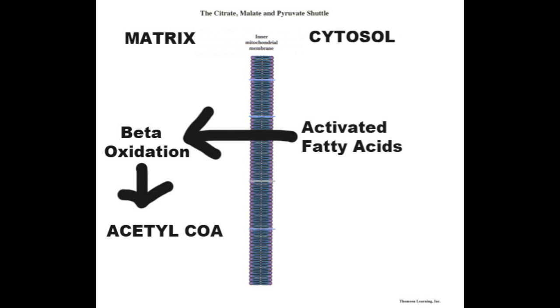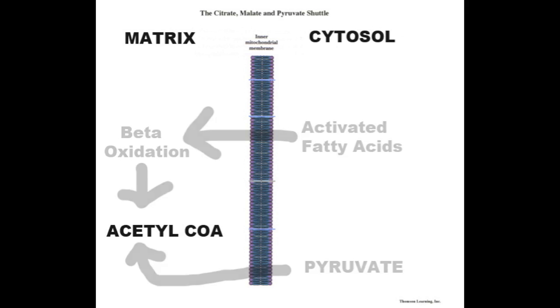Remember that when glucose is present, glycolysis will occur, producing pyruvate in the cytosol. This pyruvate will be transported into the mitochondrial matrix and then converted by pyruvate dehydrogenase into acetyl-CoA as well. So now let's just focus on the acetyl-CoA.